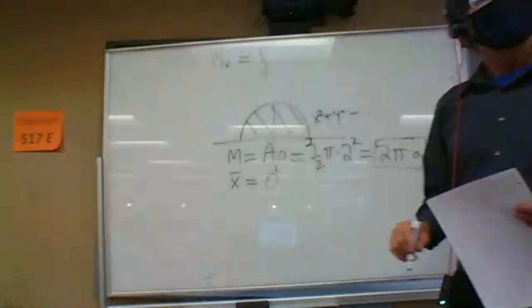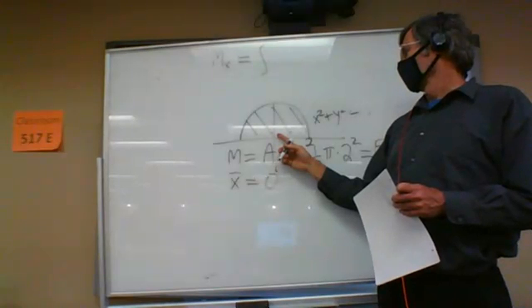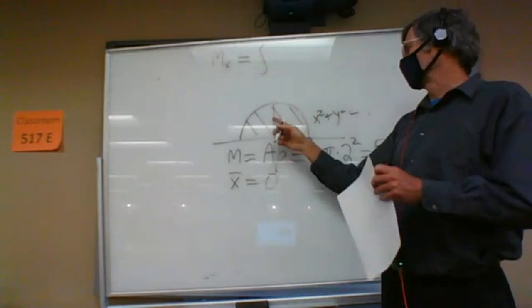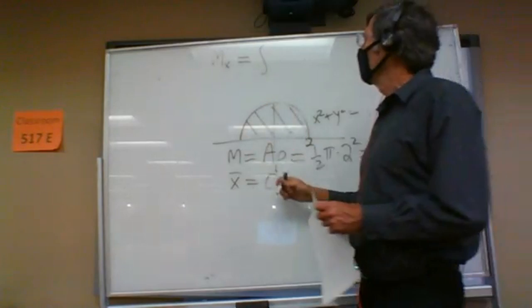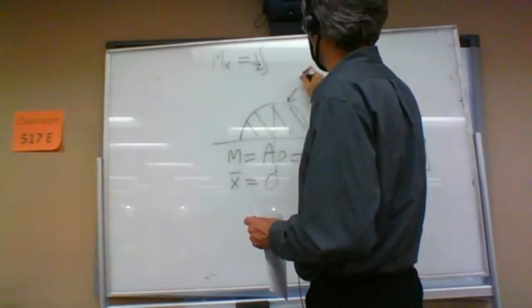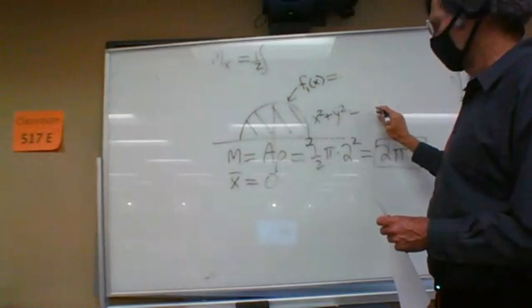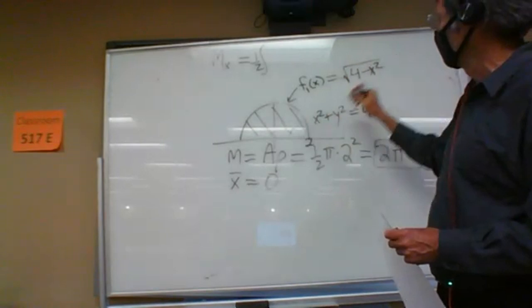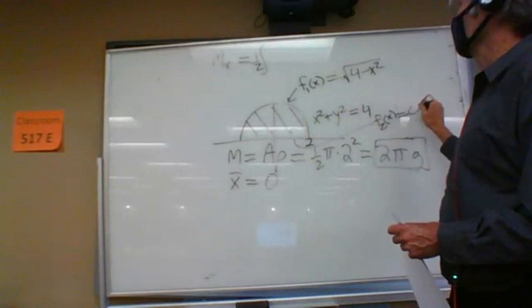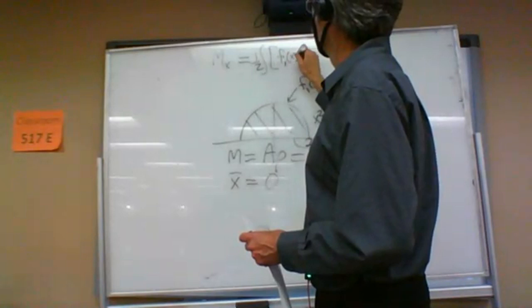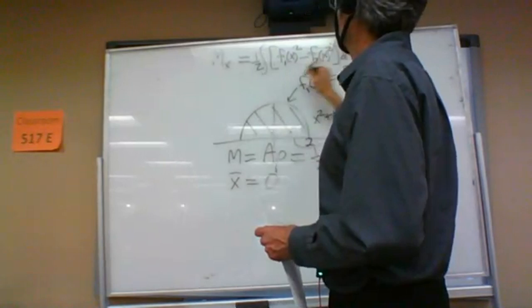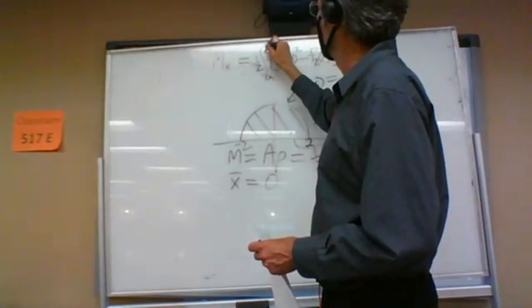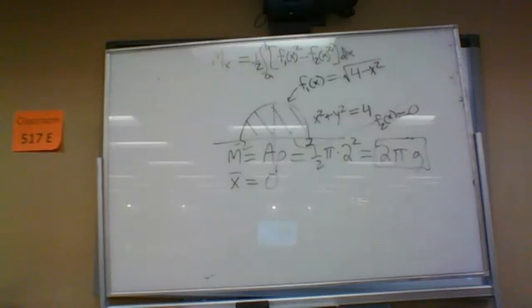We can do this two ways. We can either integrate y times the density function with the region going between a top and a bottom, or we can use the other formula: one half times the integral of f1(x) squared minus f2(x) squared dx. Solving for y, the top function f1(x) equals square root of 4 minus x squared, and f2(x), the bottom function, is zero. That goes from the minimum x value a to the maximum x value b.